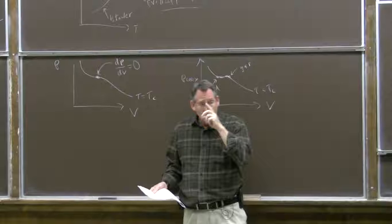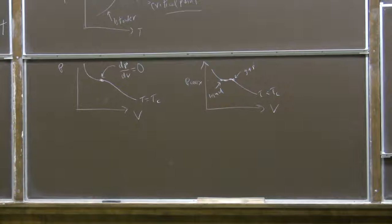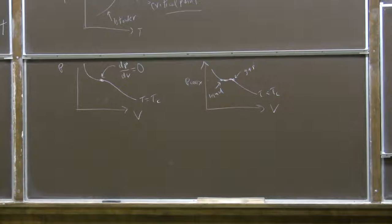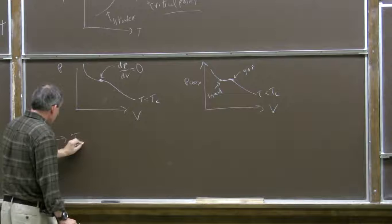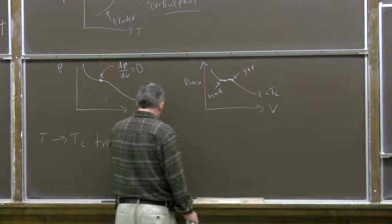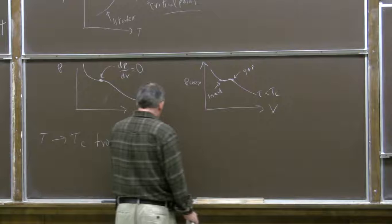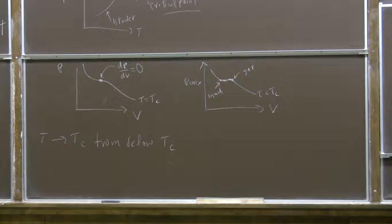I'd like to understand, if we approach the critical point from below, how that volume discontinuity behaves as the temperature gets closer and closer to the critical temperature. We'll consider τ going to τ_c from below, and compute how that discontinuity in volume behaves when the temperature is close to the critical temperature in the Van der Waals model.